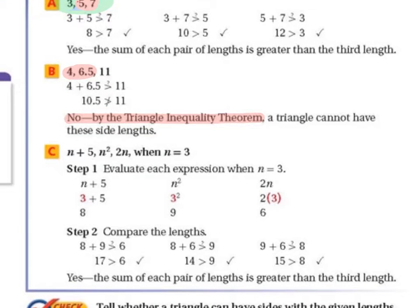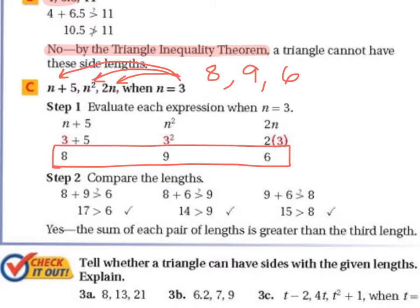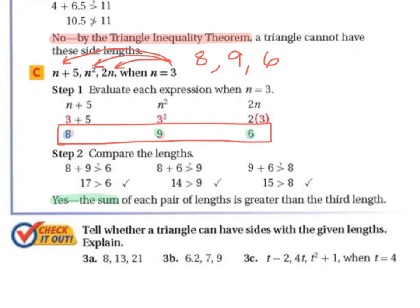Part C uses variables: n plus 5, n squared, and 2n, with n equals 3. Plugging in: 3 plus 5 is 8, 3 squared is 9, and 2 times 3 is 6. So the actual side lengths are 8, 9, and 6. Checking all pairs: 8 plus 9 is 17, greater than 6; 8 plus 6 is 14, greater than 9; and 9 plus 6 is 15, greater than 8. So yes, this can form a triangle.